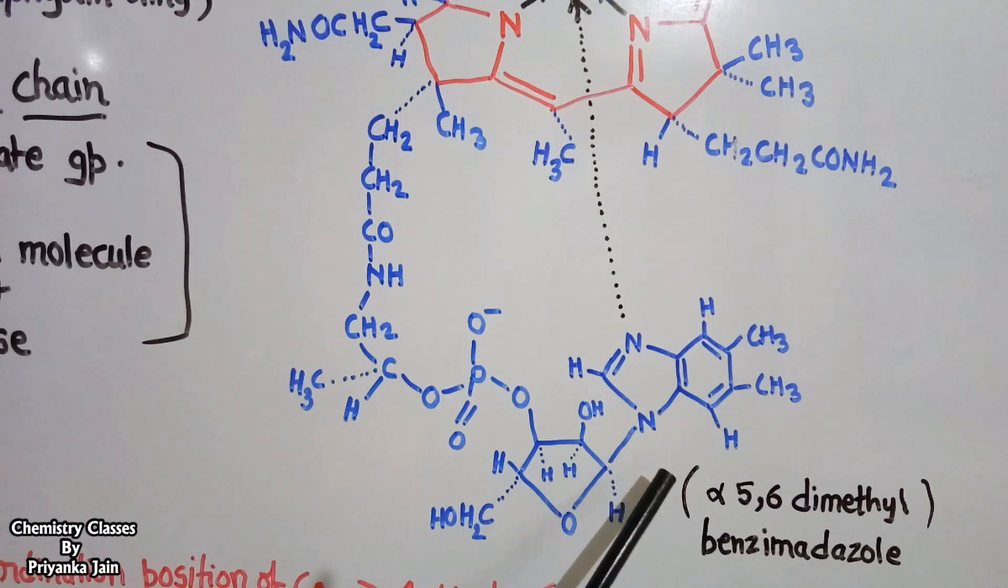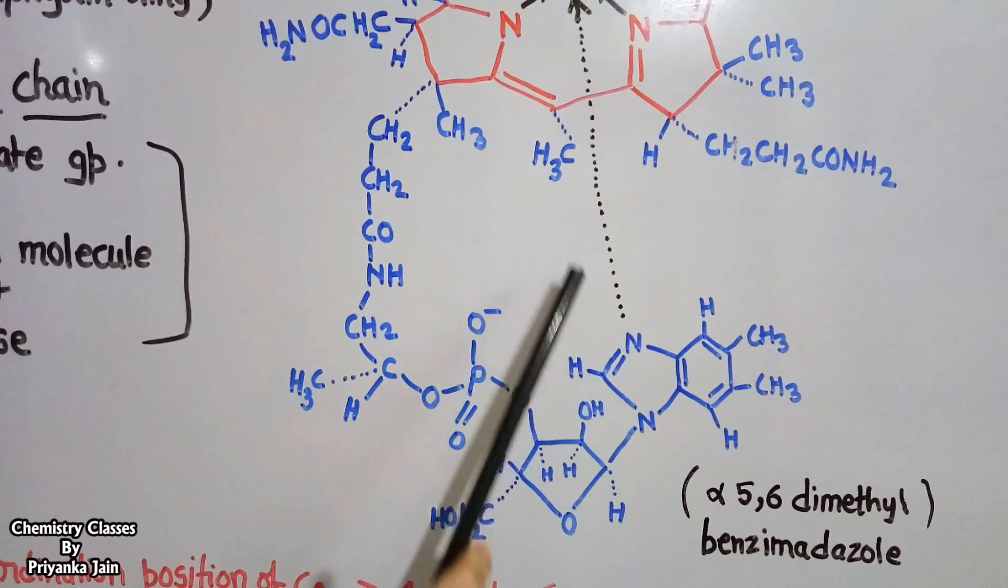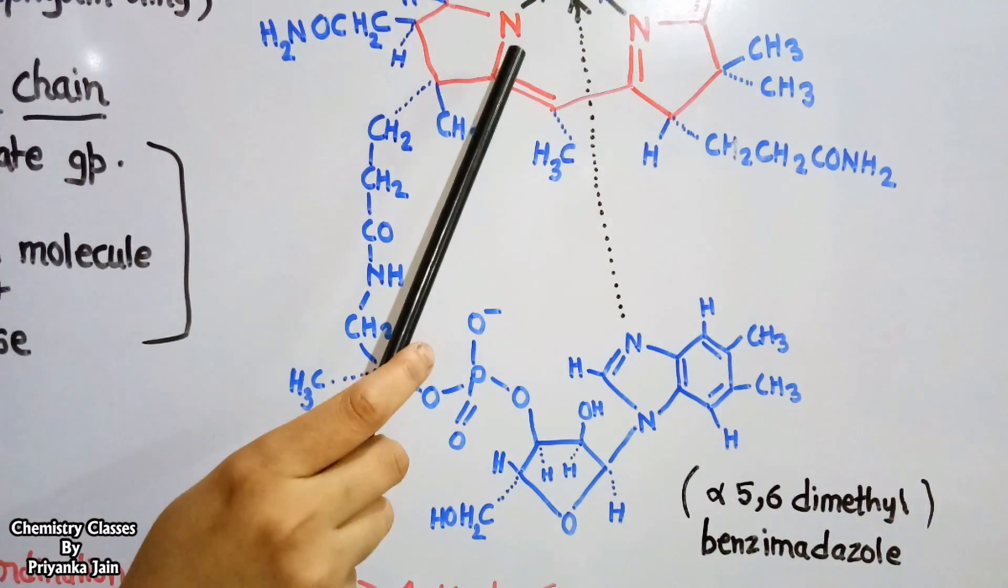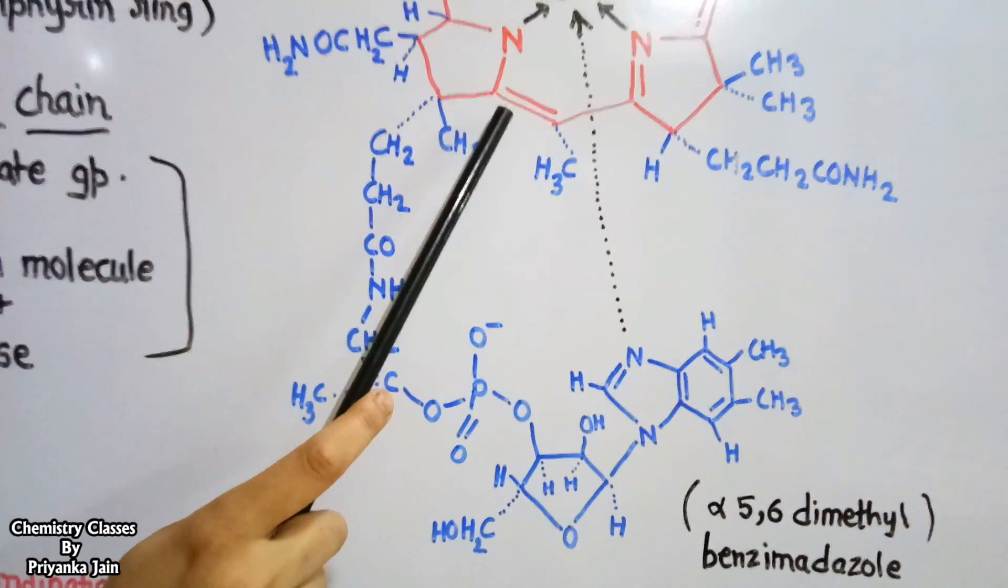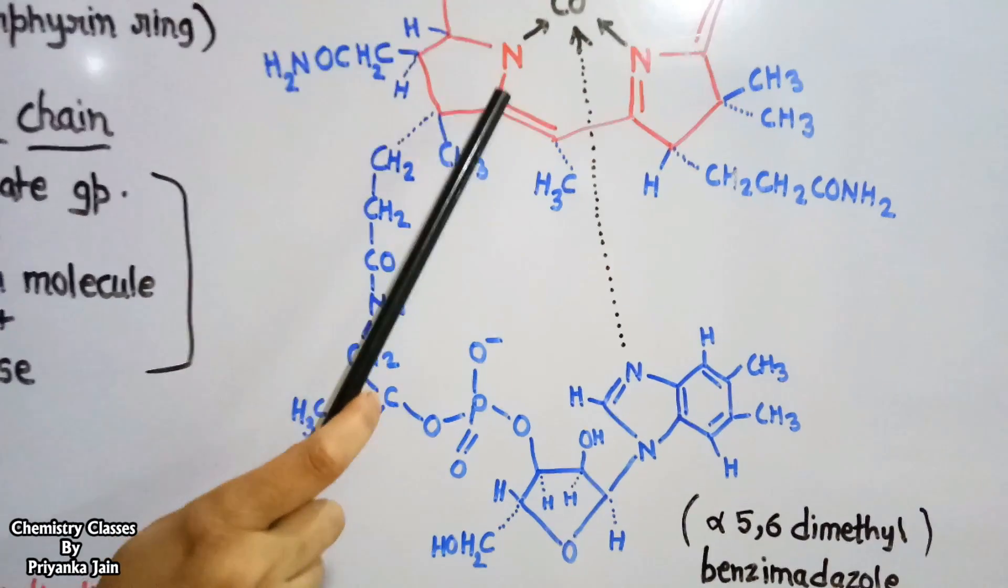That is alpha-5,6-dimethylbenzimidazole. The nitrogen atom of this base is coordinated to the cobalt ion and it is occupying the fifth coordination position of the cobalt ion.